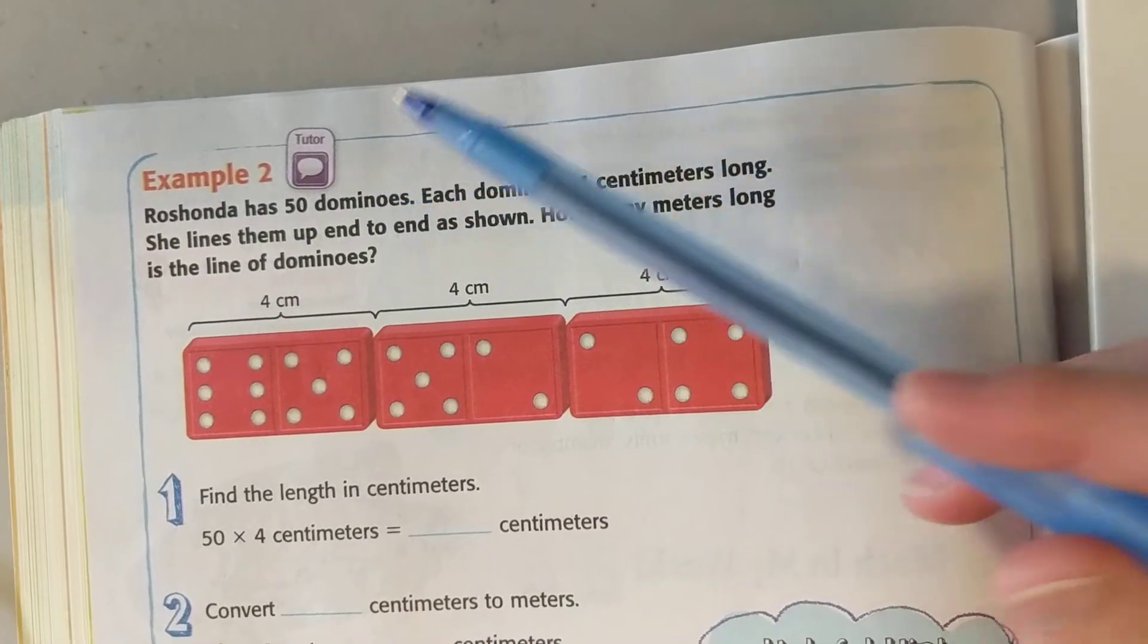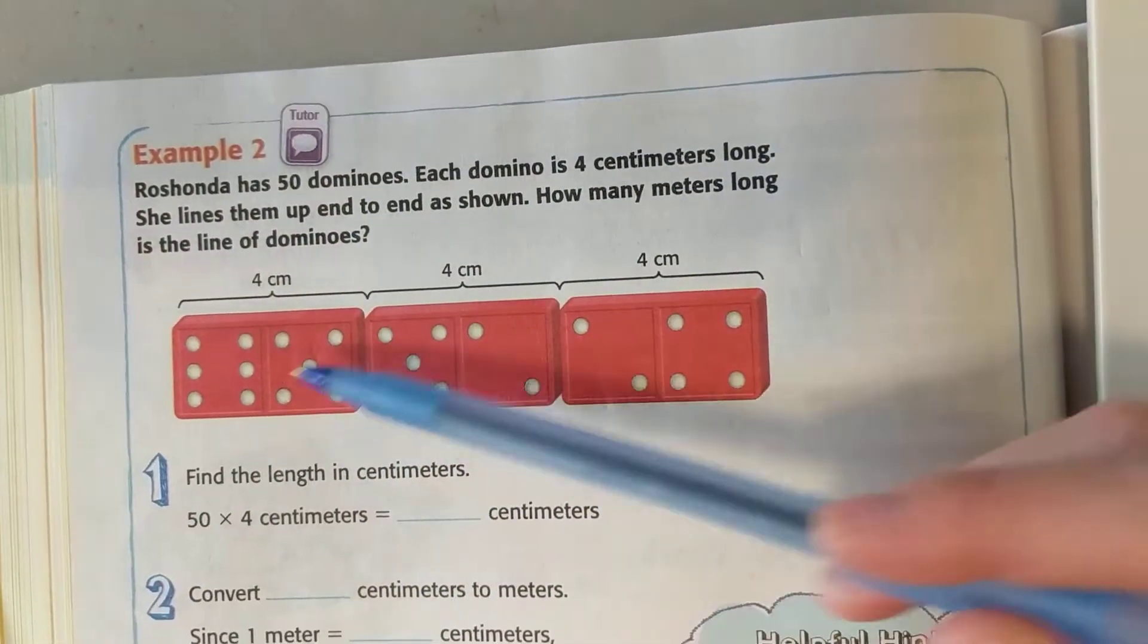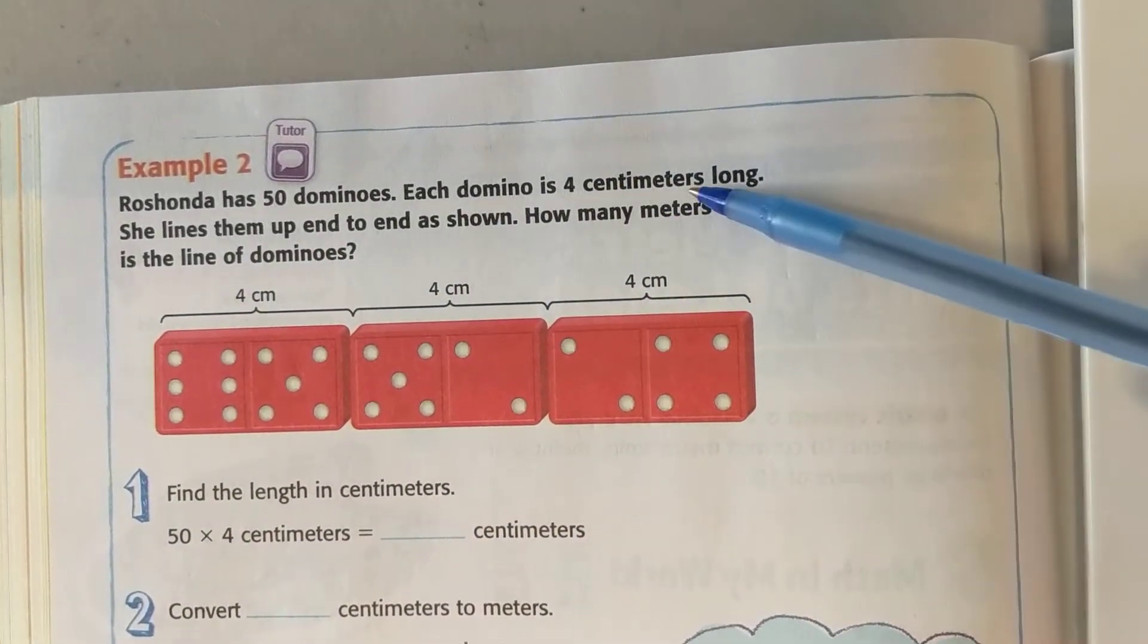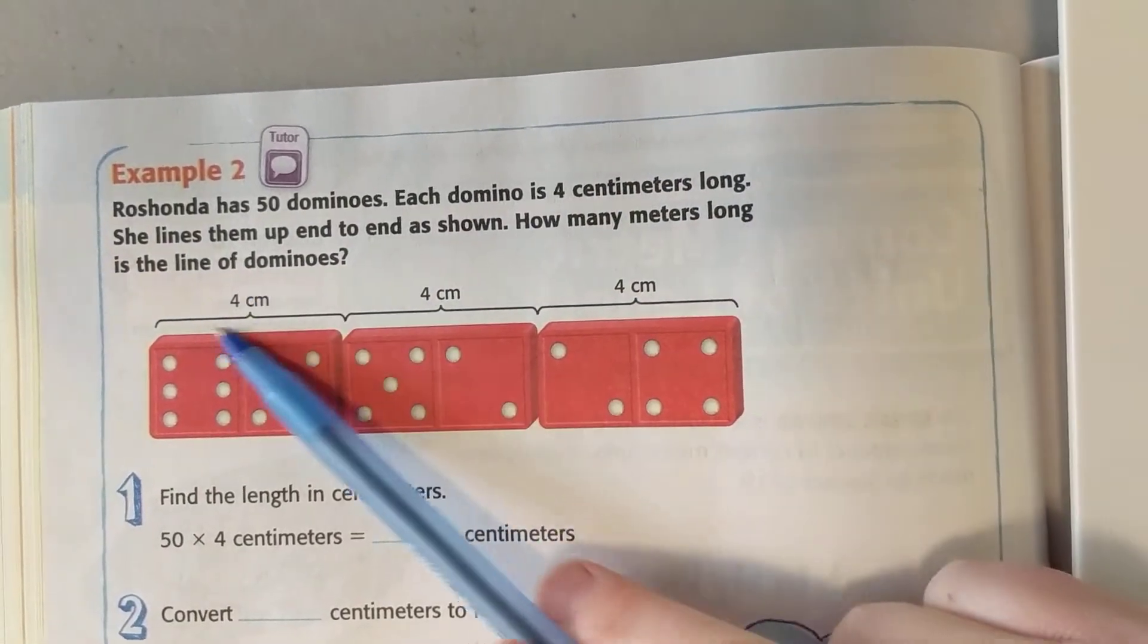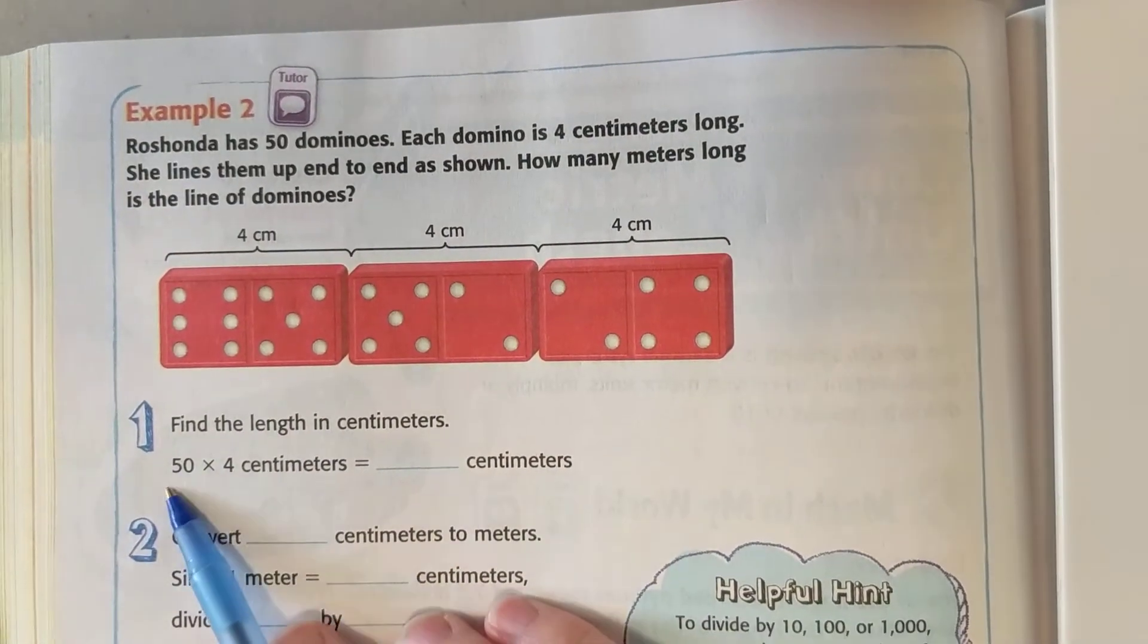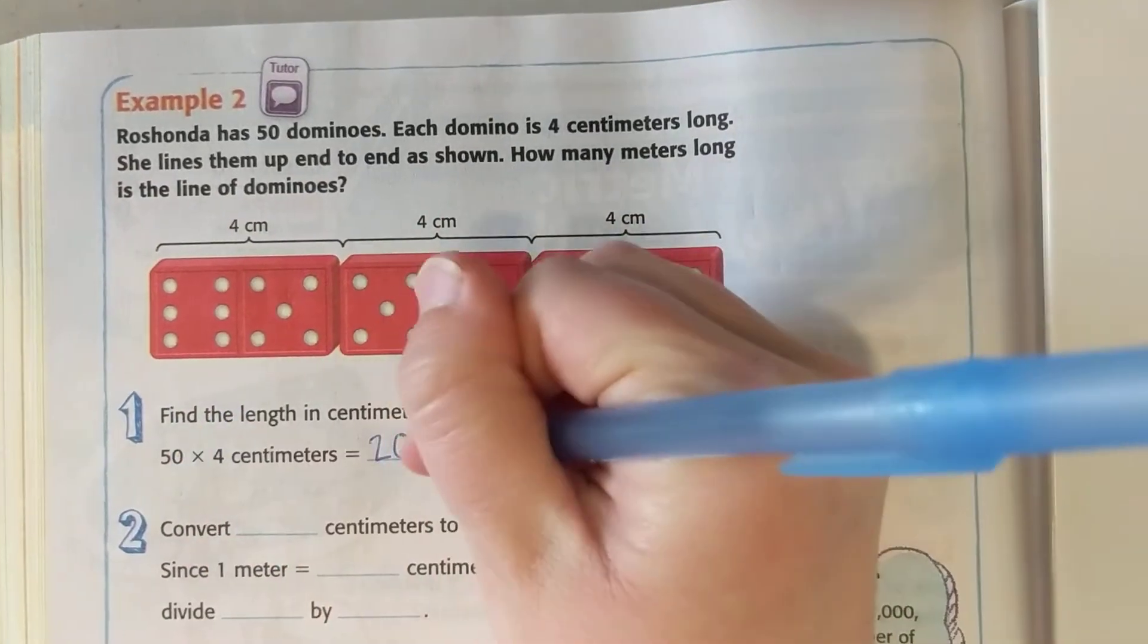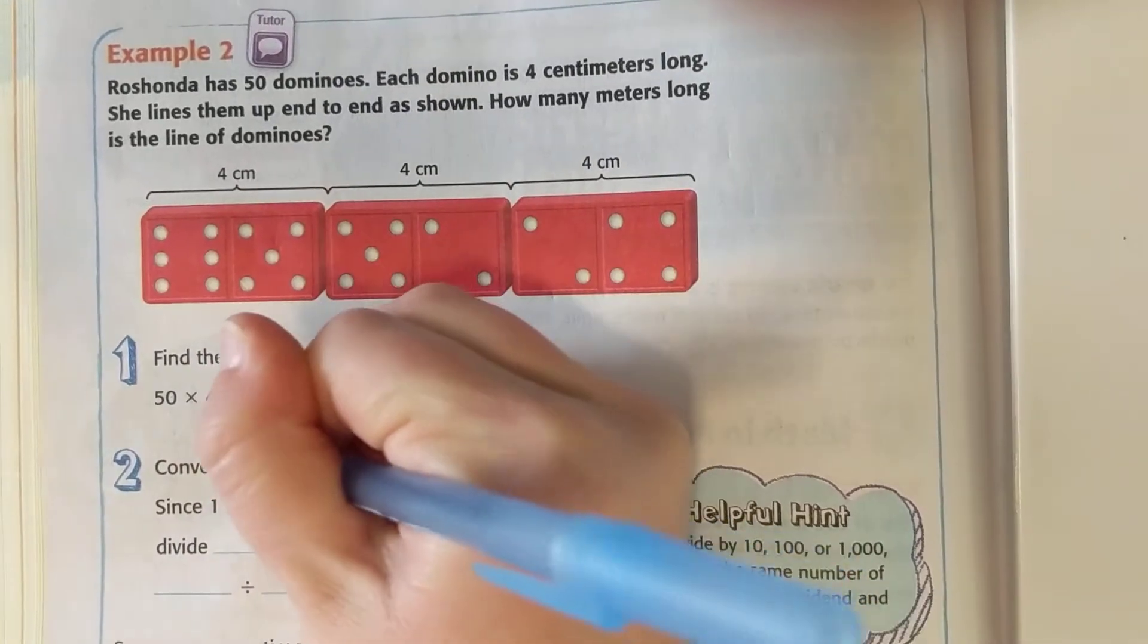Roshanda has 50 dominoes. Each domino is four centimeters long. She lines them up end to end as shown. How many meters long is the line of dominoes? I'm going to take that four centimeters and multiply by 50 to get my amount in centimeters. I look at my base fact, four times five is 20, then I put on my extra zero. So it's 200 centimeters.